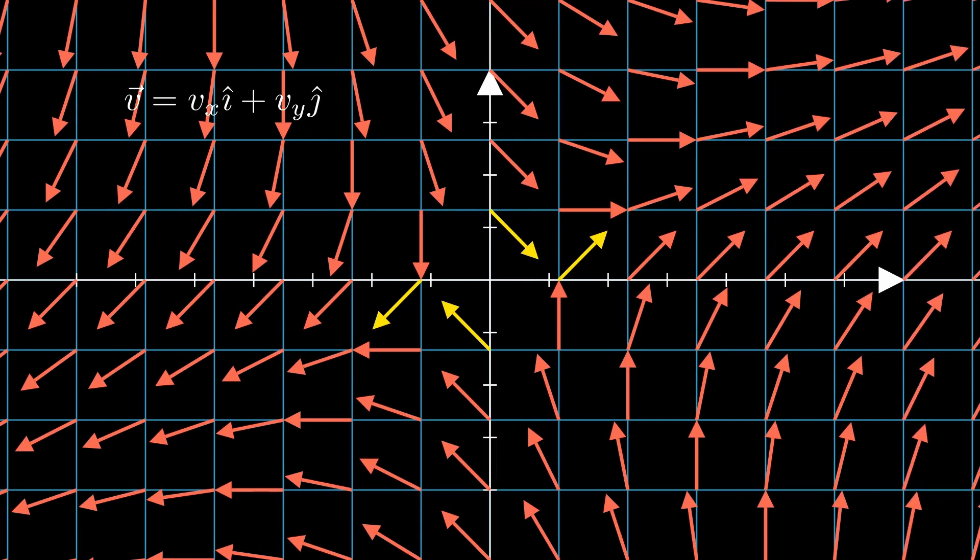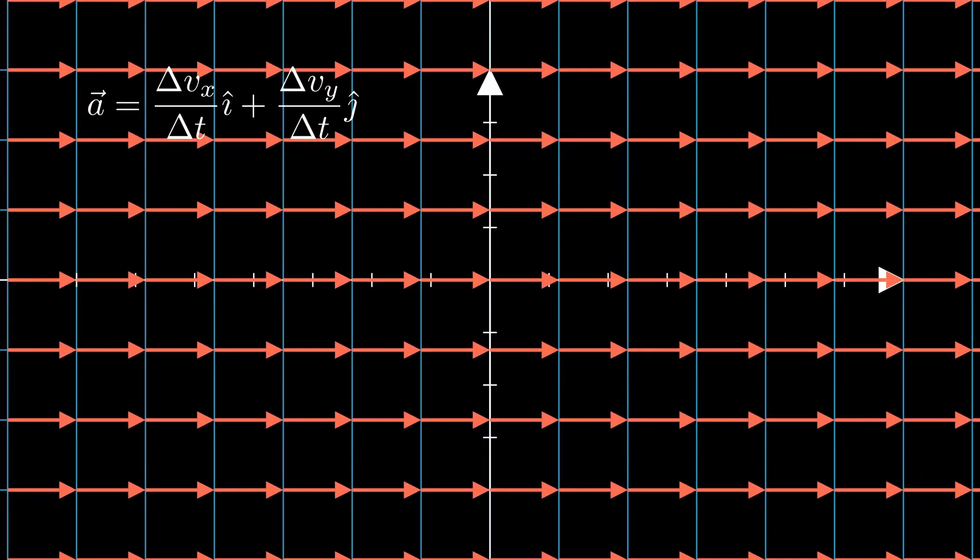Following the exact same logic, we can also describe the acceleration of our particle as the change in our velocity. To visualize this, you can imagine another vector here, pointing in the direction of the displacement of our velocity vector.